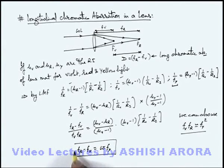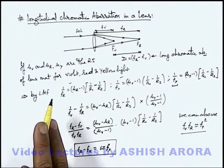And this gives us the value of longitudinal chromatic aberration in lens, which is equal to the product of dispersive power multiplied by the mean focal length of the lens for the mean light or the yellow light in case of white light incidence.